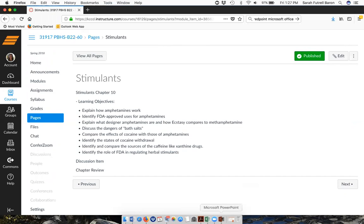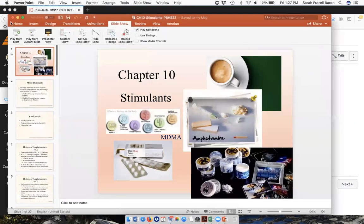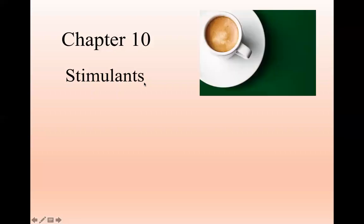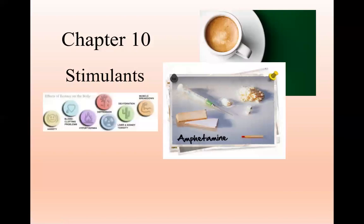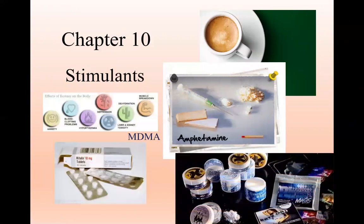When I talk about stimulants, what comes to your mind? You probably think of coffee, amphetamines, ecstasy which contains MDMA, Ritalin, and bath salts. These are just some examples of stimulants. Not pictured here is cocaine, and there are many other stimulants. In this module we're going to go over the major stimulants — amphetamines and their therapeutic uses, cocaine, bath salts, and more.